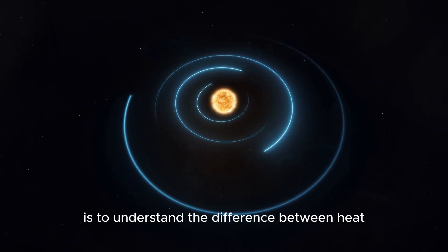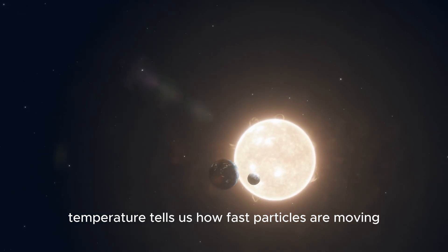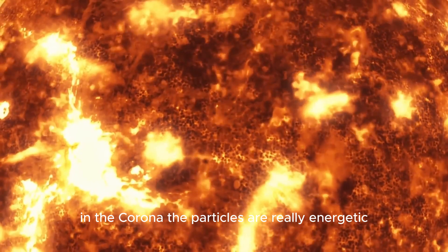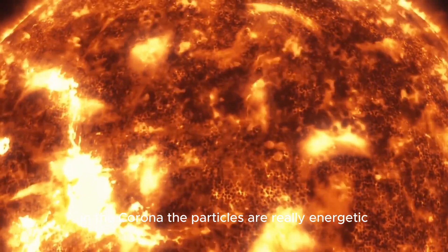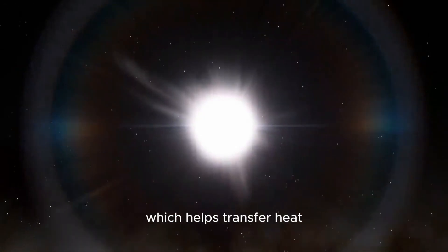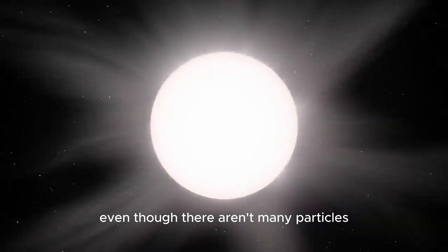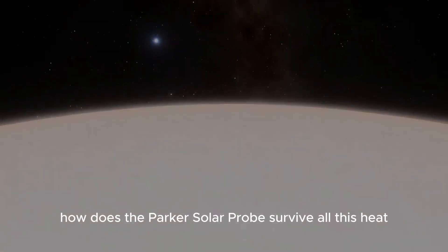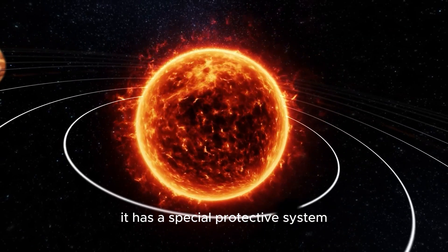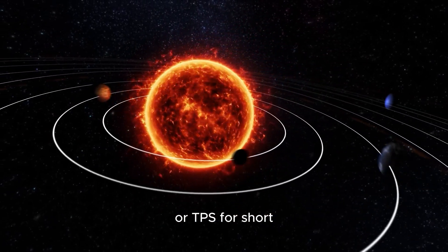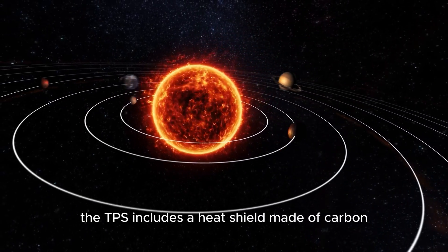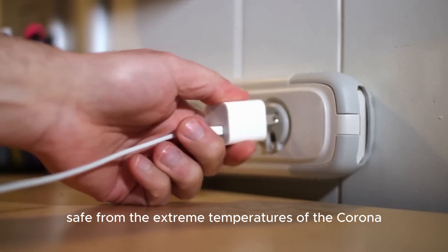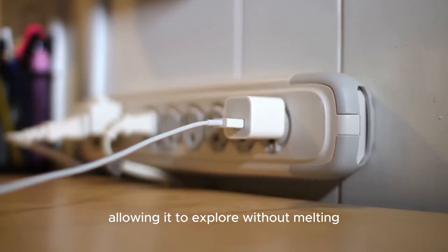One big goal is to understand the difference between heat and temperature. Temperature tells us how fast particles are moving, while heat is all about the energy those particles have. In the corona, the particles are really energetic. They move fast and bump into each other a lot, which helps transfer heat. Even though there aren't many particles, their high energy keeps the temperature up. So, how does the Parker Solar Probe survive all this heat? It has a special protective system called the Thermal Protection System, or TPS for short. The TPS includes a heat shield made of carbon. This shield helps keep the probe safe from the extreme temperatures of the corona, allowing it to explore without melting.